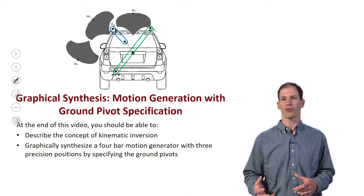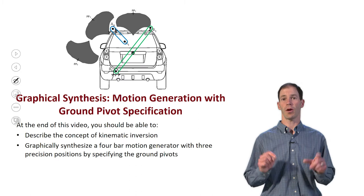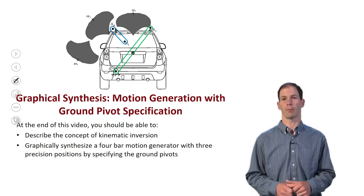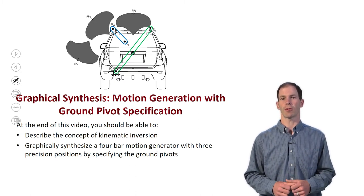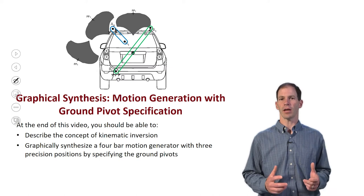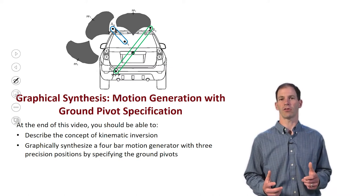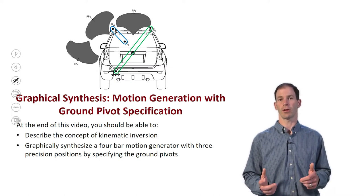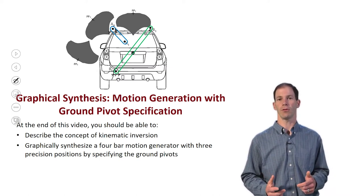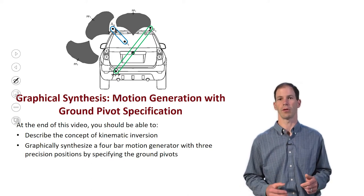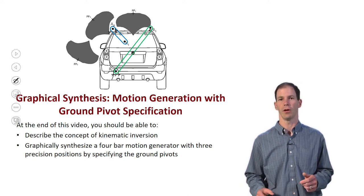An alternative approach is to specify the ground pivots and figure out where the moving pivots are going to be, and that's the technique we're going to use here. Before we get there we need to talk about kinematic inversion, because that's a tool we're going to use in quite a few different graphical synthesis techniques we'll be moving into in just the next couple of lectures.